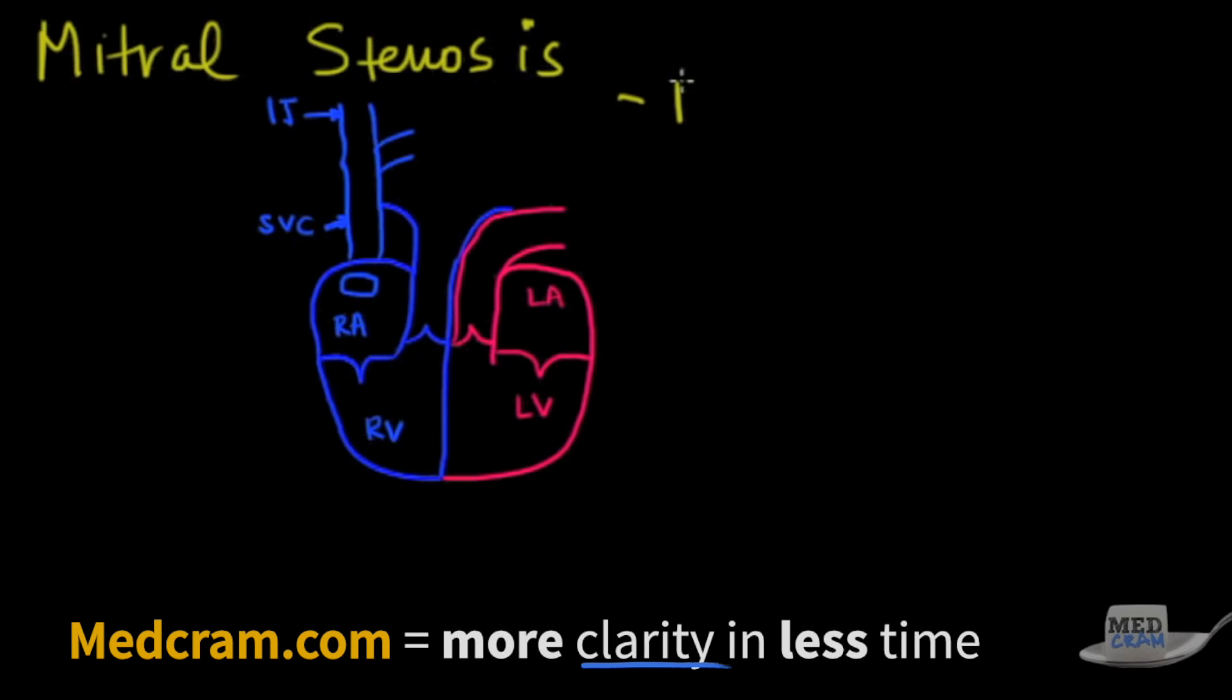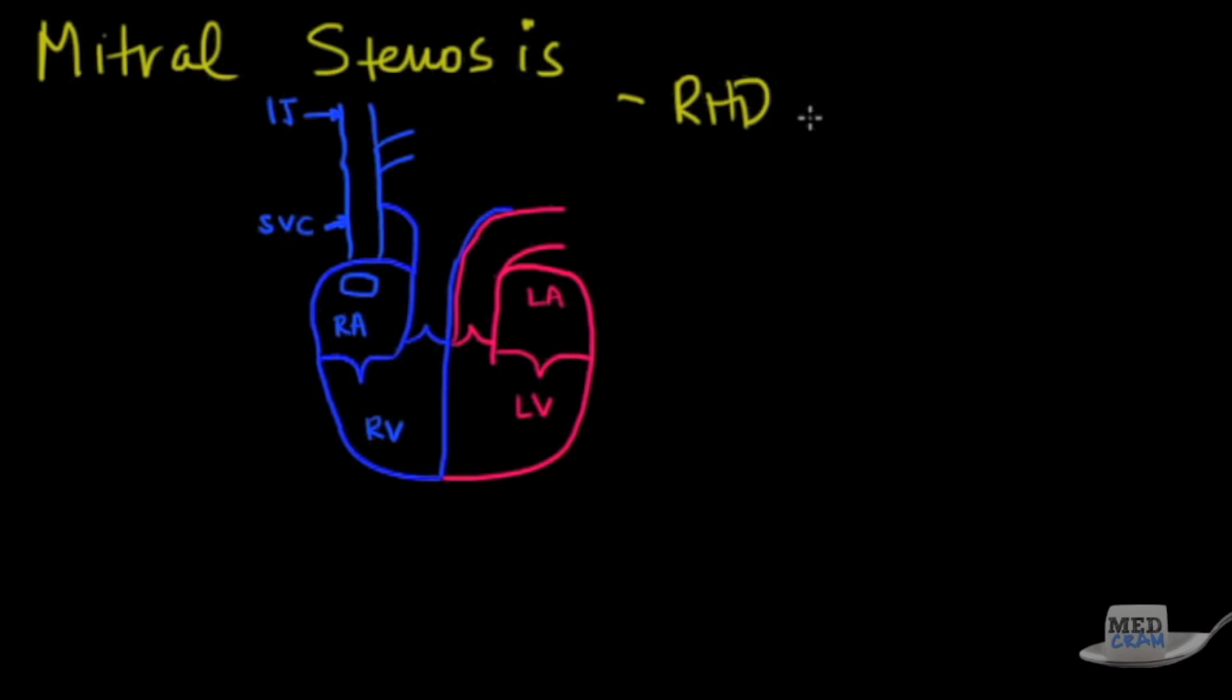is related to rheumatic heart disease. Remember what rheumatic heart disease is: you have an infection and then antibodies that are floating around that would like to attack bacteria, but instead they attack your valves, specifically this mitral valve here.